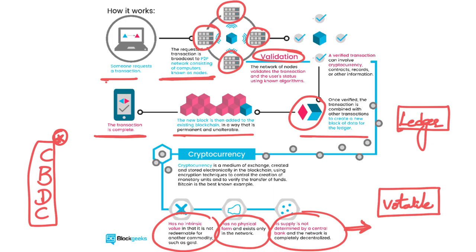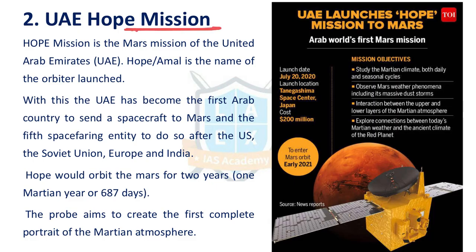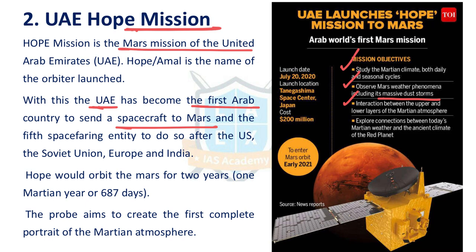The next issue is the Hope Mission. UAE's Hope Mission is the Mars mission of UAE, and UAE became the first Arab country to send a spacecraft to Mars. The objectives are to study the Martian climate on daily and seasonal cycles, to observe Mars weather phenomena including massive dust storms, to study the interaction between upper and lower layers of the Martian atmosphere, and to explore the connections between today's Martian weather and the ancient climate of the Red Planet. They have already reached Mars and it will function for the next two years.